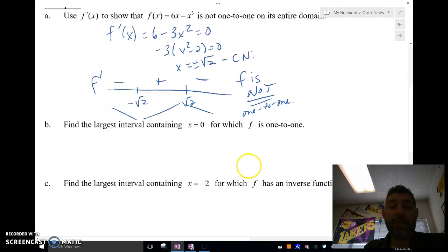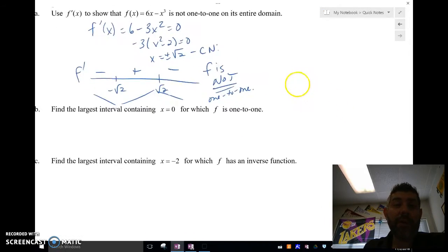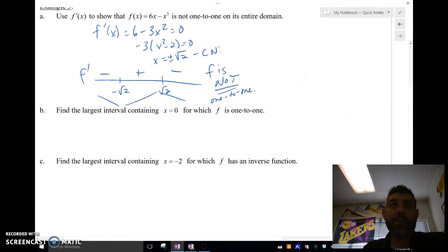Find the largest interval containing x equals 0 for which f is one-to-one. So where on this function, containing x equals 0, is the function one-to-one? Well, 0 is right here. This is where 0 is.